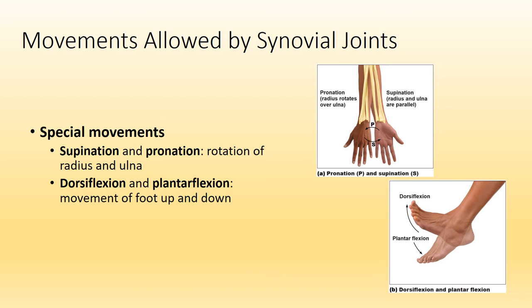The first group of special movements will be supination and pronation, which occur at the radius and ulna when the radius rotates about the ulna. Supination is palms up — think 'more soup, please,' holding your arms out in front with palms facing up. As you rotate the bones in your forearm to produce palms facing the floor, that is pronation.